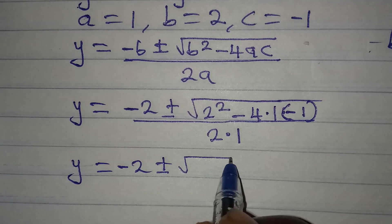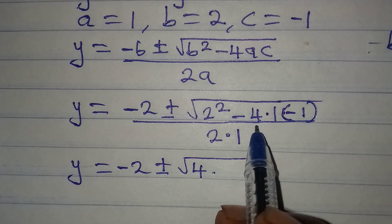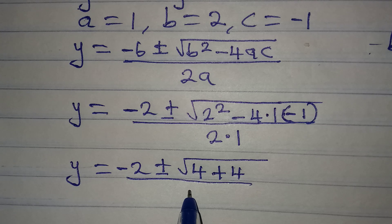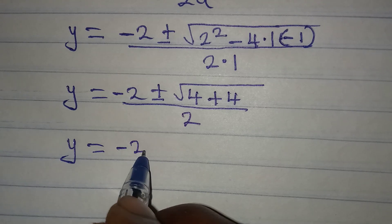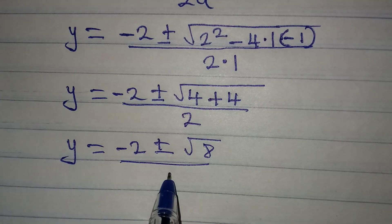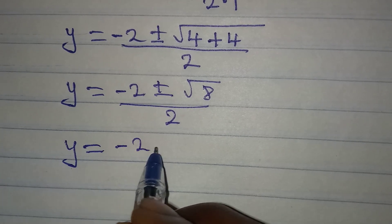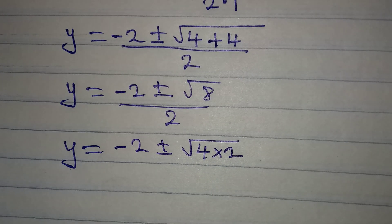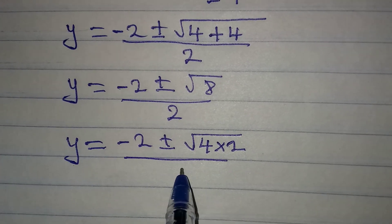Continuing: 2² = 4, and -4 × 1 × -1 gives +4, so the discriminant is 4 + 4 = 8, all over 2. Taking another step: y = (-2 ± √8) / 2. I can simplify √8 as √(4 × 2), so the whole thing is over 2.